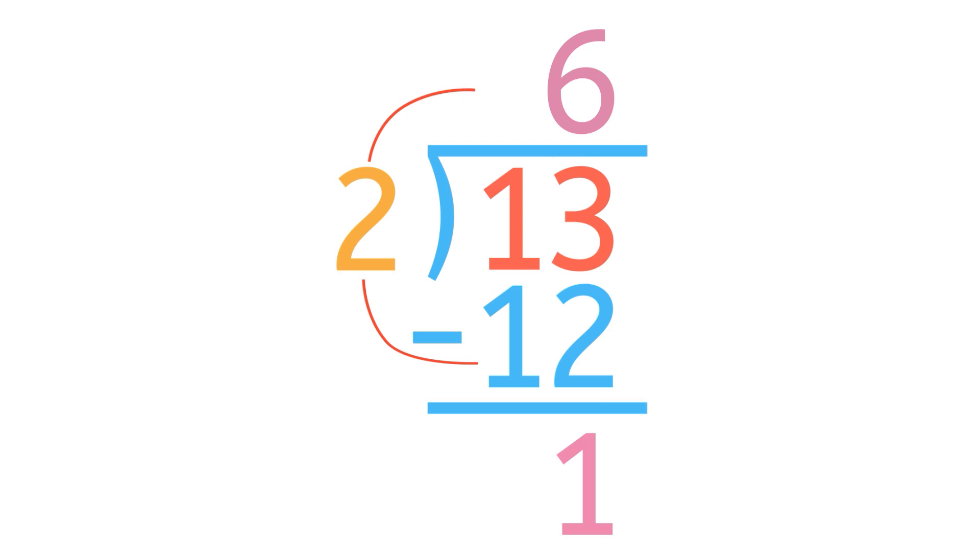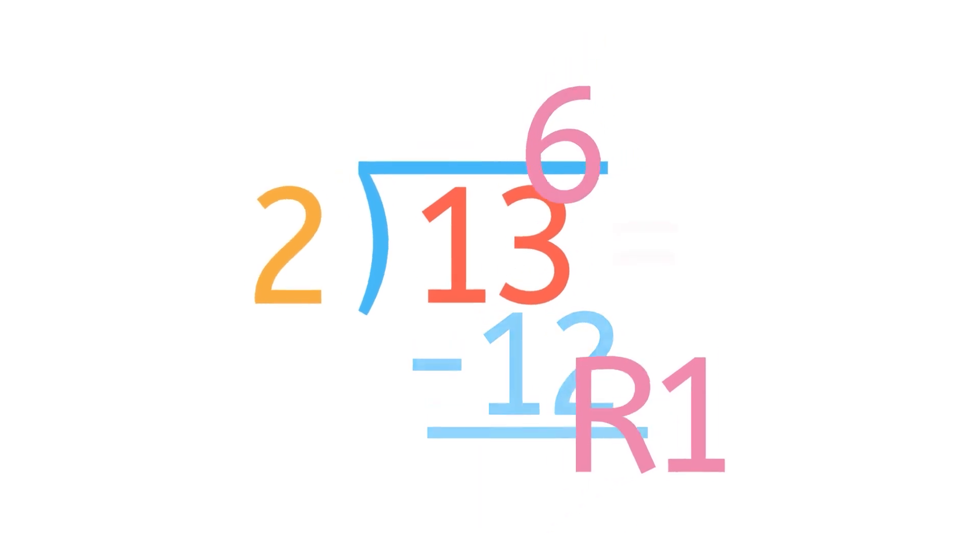The quotient is the answer to a division problem, and the divisor is the number you're dividing by. Remainders are typically written with the letter R followed by the number. The answer to 13 divided by 2 is 6R1.